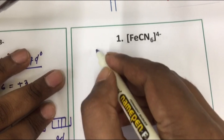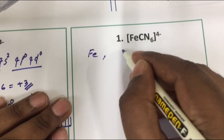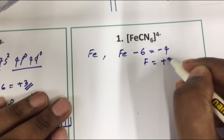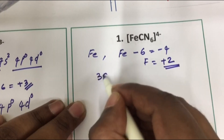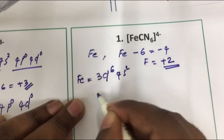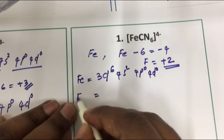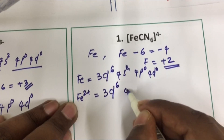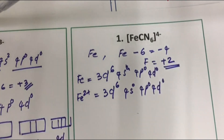Now let's do Fe(CN)₆⁴⁻. The oxidation state: six CN⁻ ligands give −6, and the overall charge is −4, so Fe = +2. The configuration of Fe²⁺ is 3d⁶, 4s⁰, 4p⁰, 4d⁰.